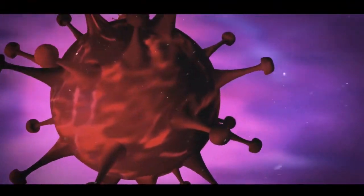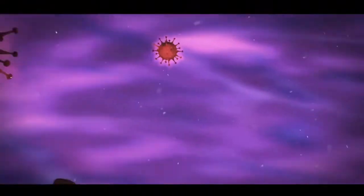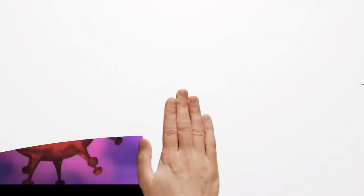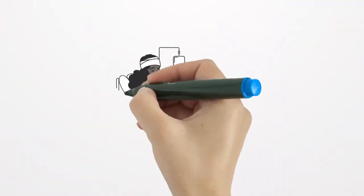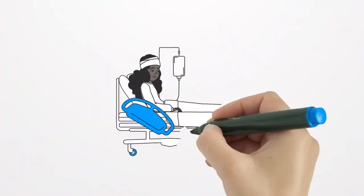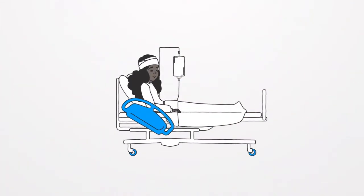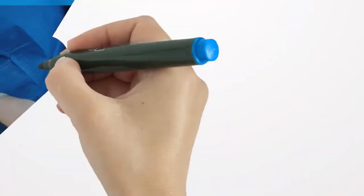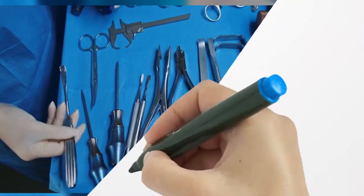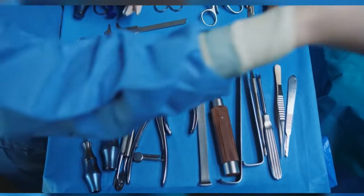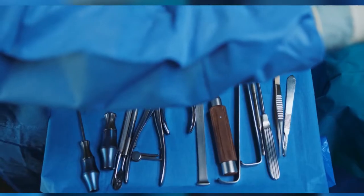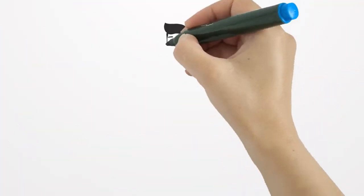During surgery, bacteria present on the patient's skin or surrounding environment can access the surgical site, leading to an infection. These bacteria can also enter the body through medical devices like catheters, through surgical implants, or even through improper surgical techniques.